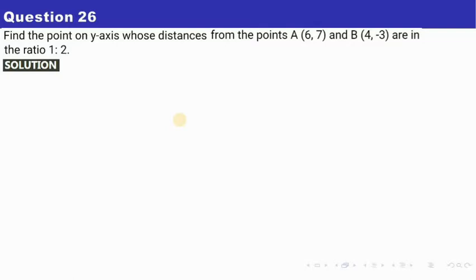So let us begin with question number 26. Find the point on y axis whose distances from the points A (6, 7) and B (4, -3) are in the ratio 1 is to 2.